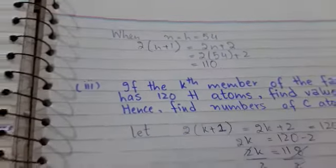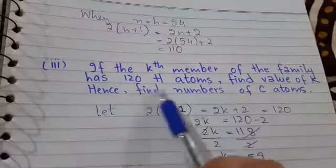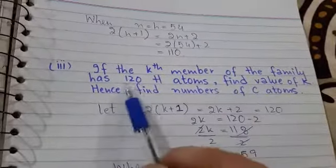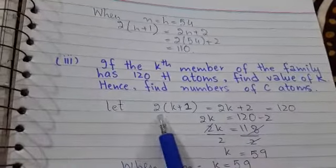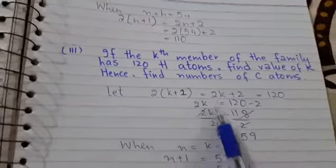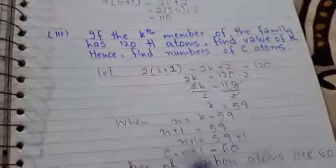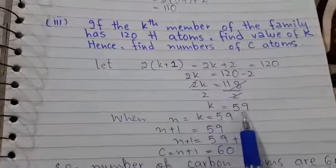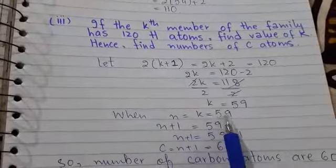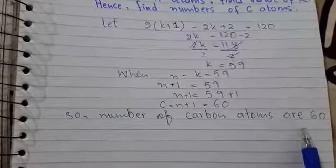In the third part: if the kth member of the family has 120 hydrogen atoms, find the value of k, then find the number of carbon atoms. Using the hydrogen formula 2(k + 1) where k and n are equivalent: 2k + 2 = 120. Subtracting 2 from both sides and dividing by 2 gives k = 59. To find the carbon atoms, we use n + 1 = 59 + 1 = 60. So the number of carbon atoms is 60.